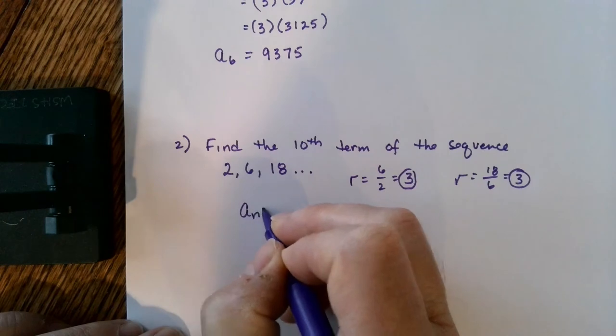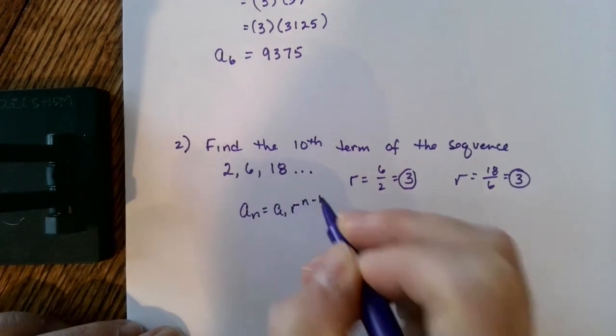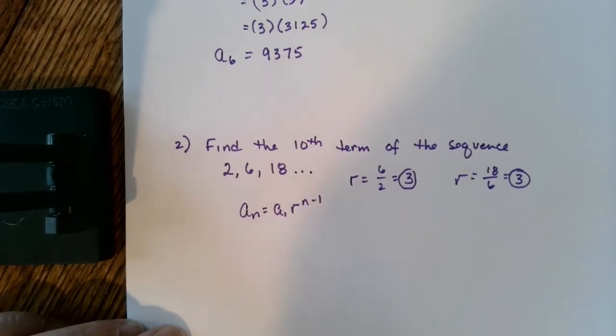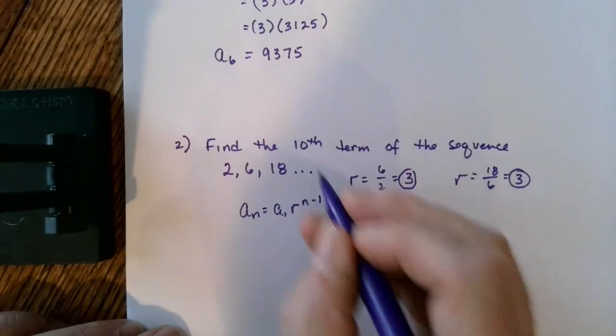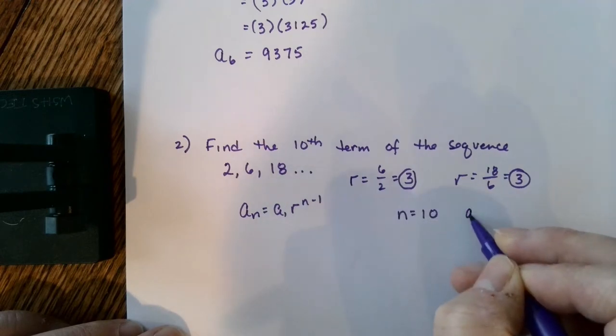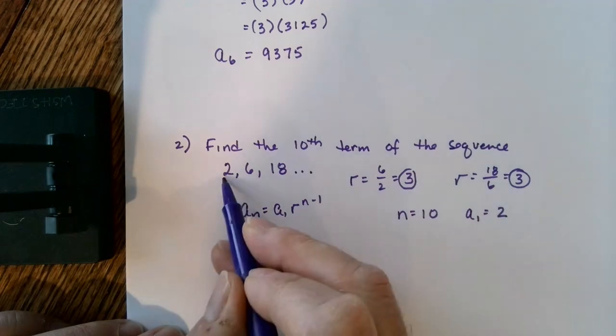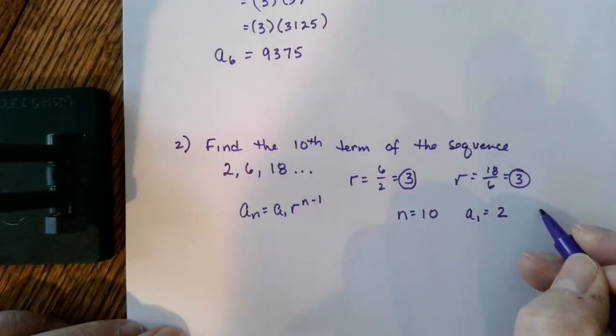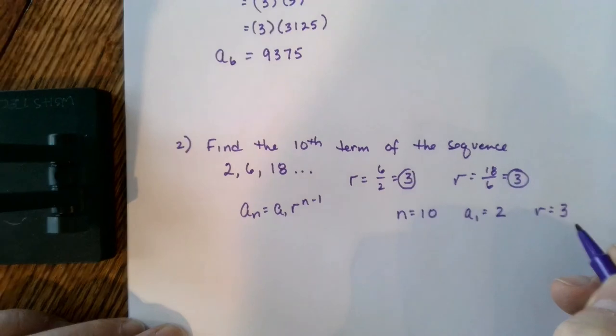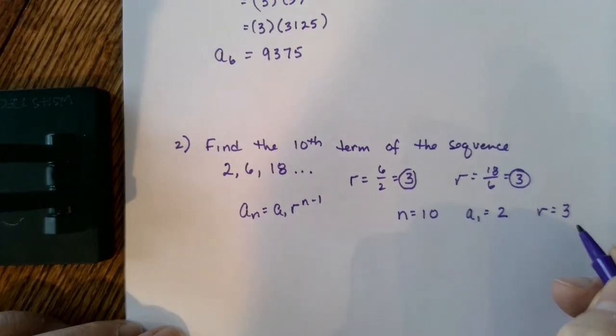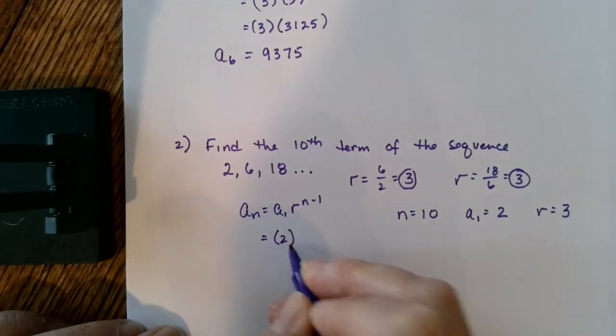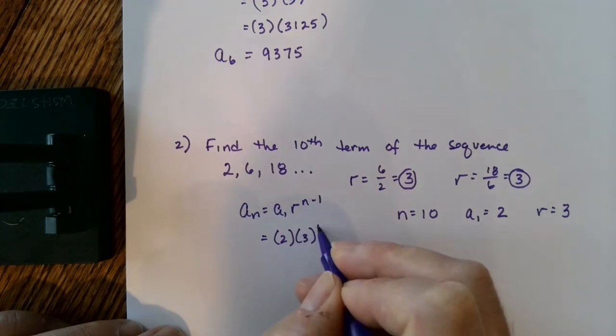I now can use my formula that any term in my sequence is equal to the first term times my common ratio raised to the n minus 1 power. So now I'm looking for the 10th term. Let's fill in what we know. We know that we have 10 terms. We know our first term is 2. How do we know that? It's right here. We also know that our r, our common ratio is 3. So now we can substitute in and find the value of the 10th term. It's going to end up being 2 times 3 raised to the 10 minus 1 power.